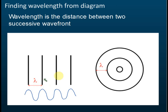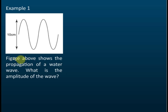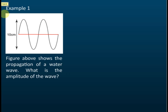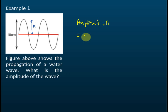First example: the figure shows the propagation of a water wave. What is the amplitude of the wave? Amplitude is the maximum displacement from the equilibrium position. The equilibrium position is at the center, and the amplitude is from the equilibrium position to the maximum point. Therefore, amplitude A = 10 cm ÷ 2 = 5 cm.